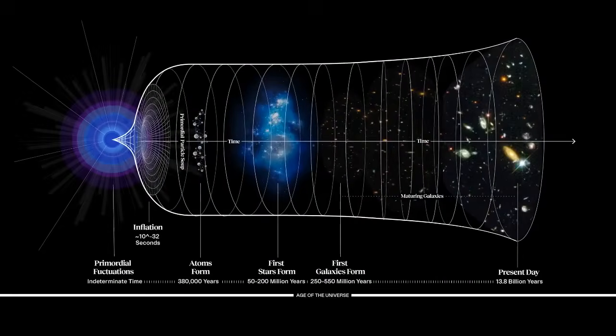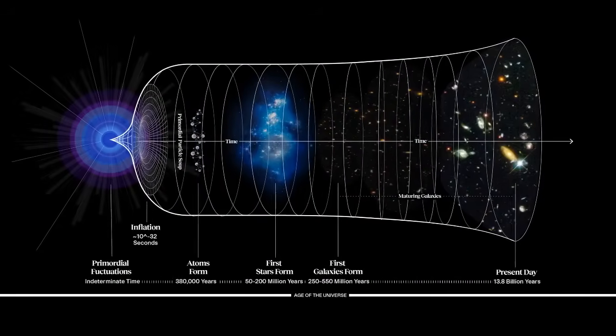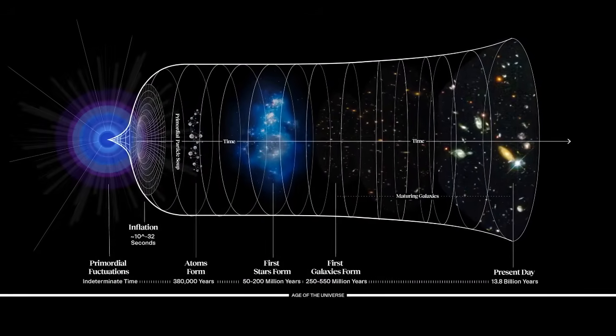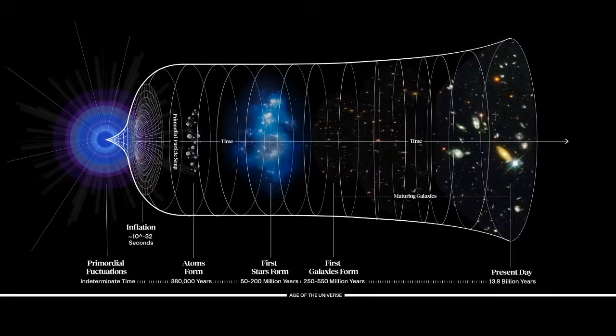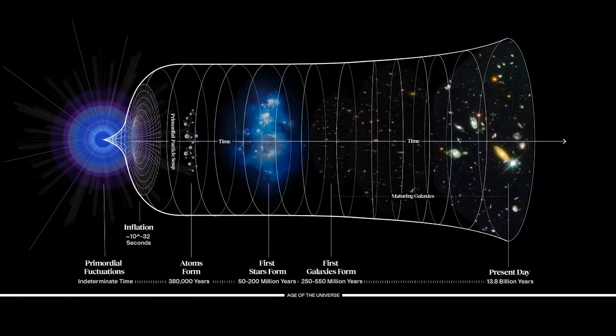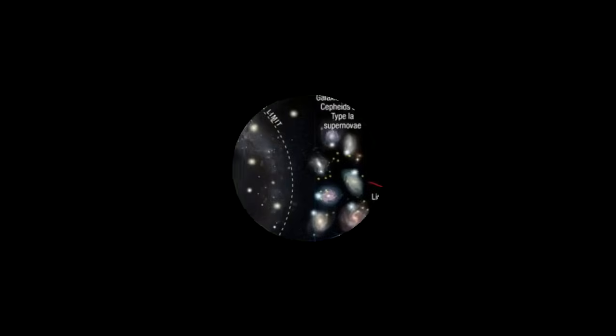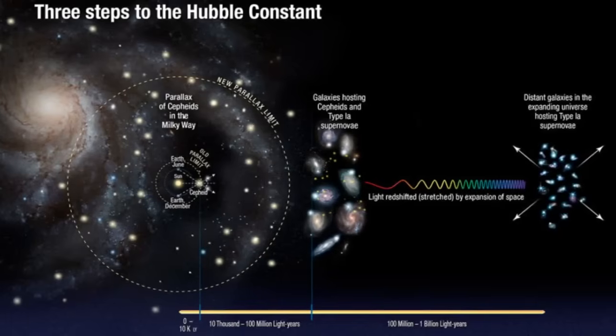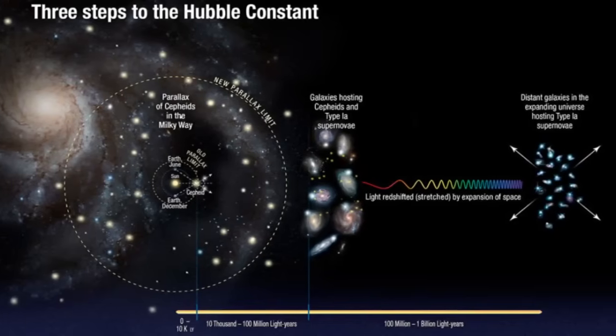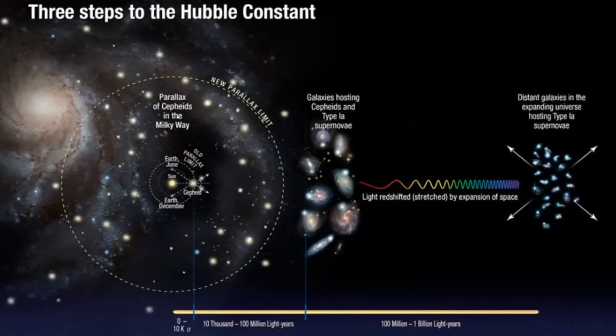Cosmology, the study of the universe's origin, structure, evolution, and eventual fate, has made substantial progress over the past century. The Big Bang Theory, which suggests that the universe has been expanding from a hot dense initial state for about 13.8 billion years, is the prevailing cosmological model. This expansion is characterized by the Hubble constant, a value that represents the rate at which the universe is expanding.